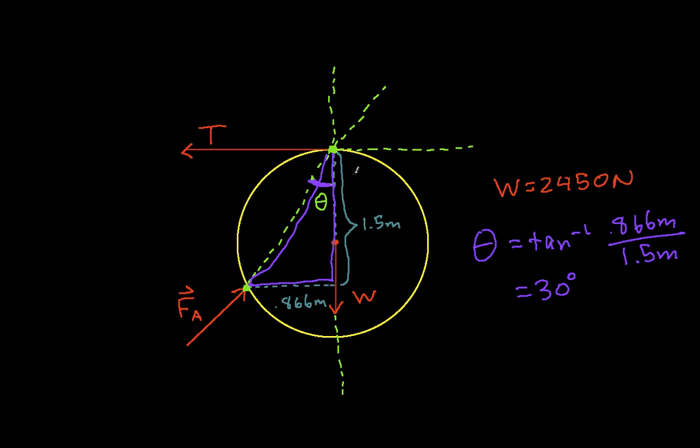Now if we just use our static equilibrium condition, the summation of forces in the y direction is equal to 0. The reason I chose that is because I know the magnitude of W, and the only other force in the y direction is the component of FA in the vertical direction. We know that FAY is equal to the magnitude FA times the cosine of 30 degrees.